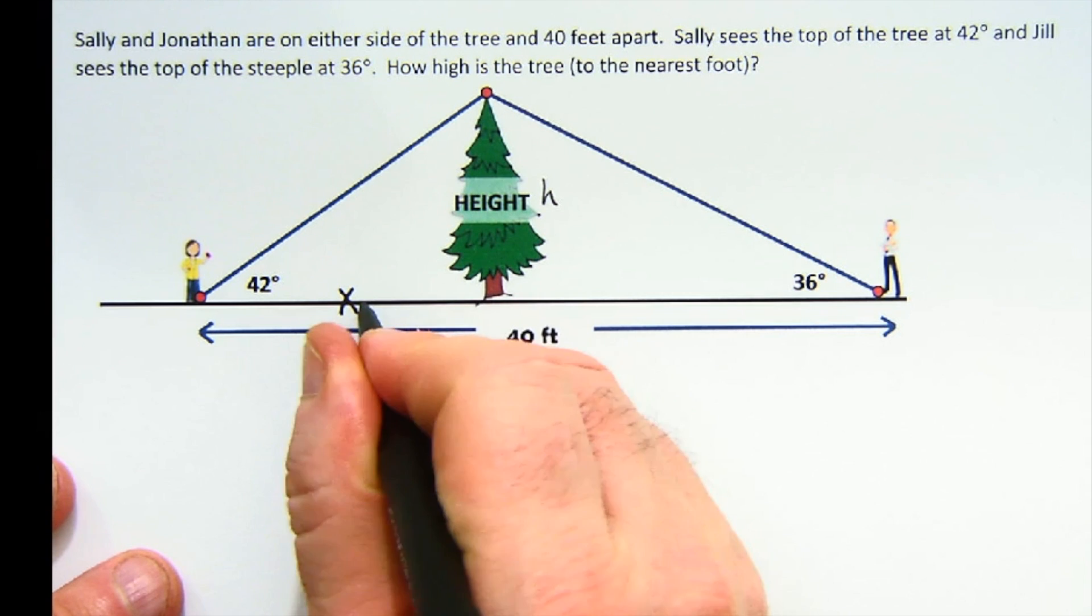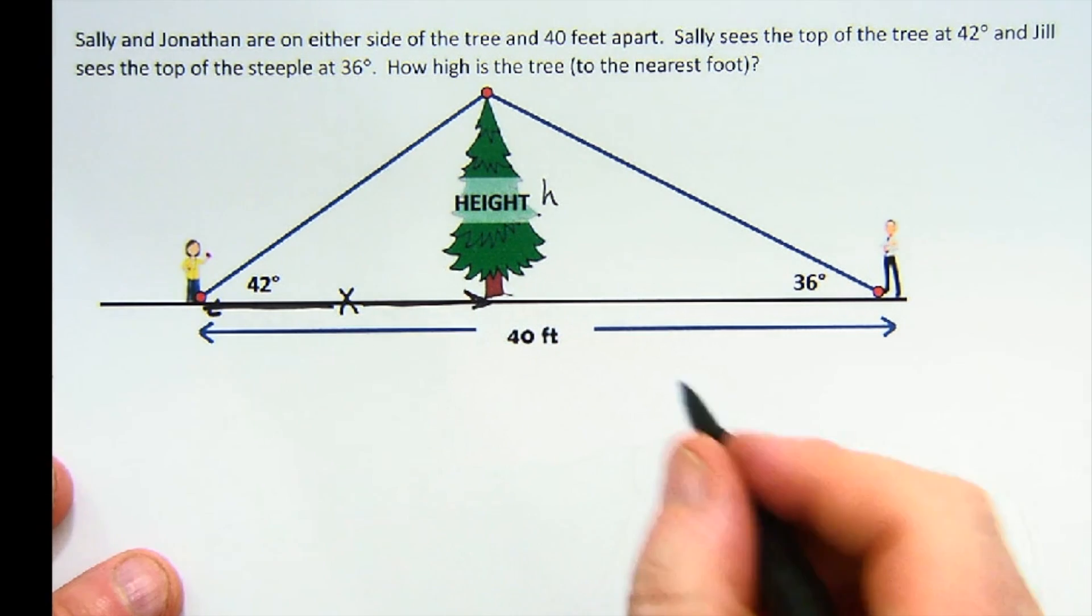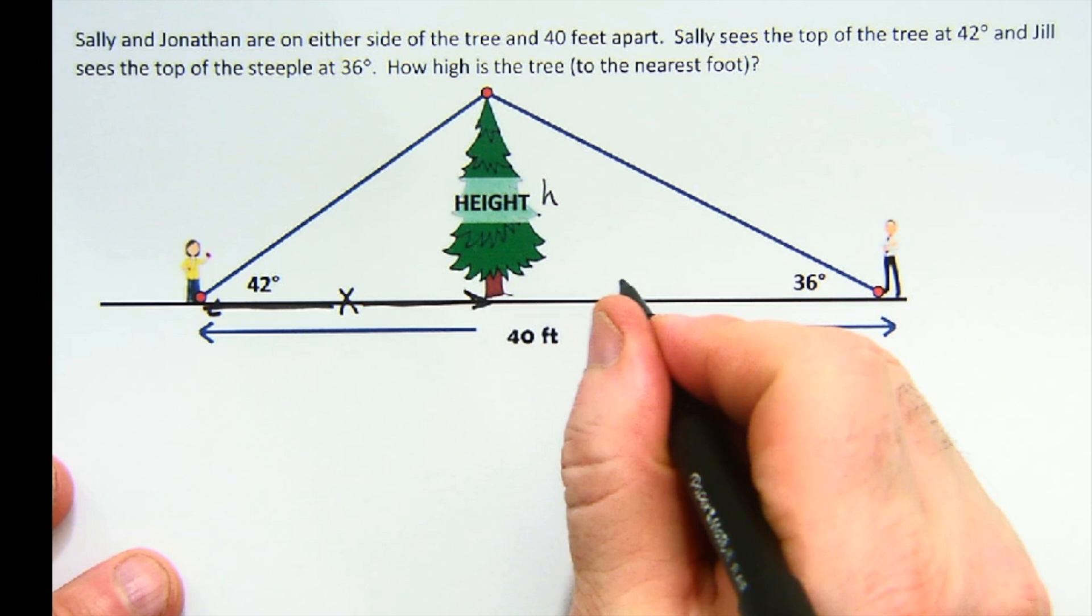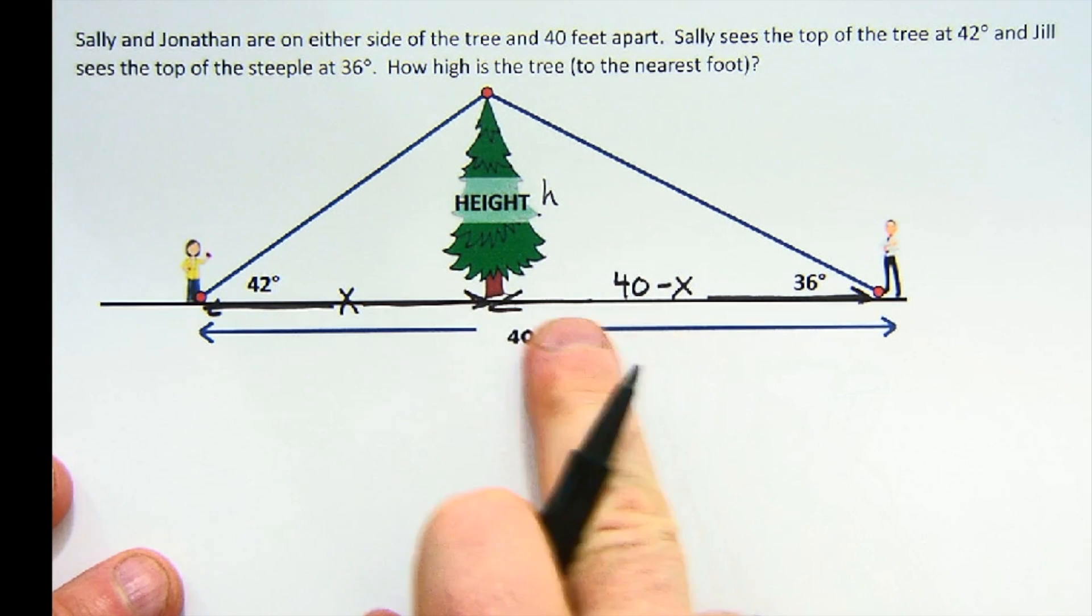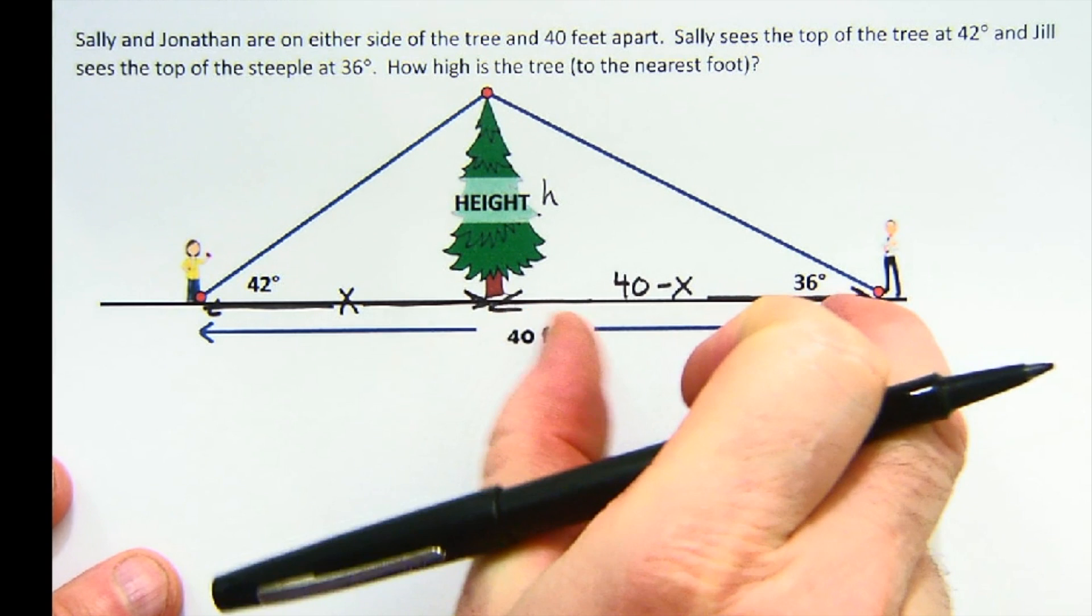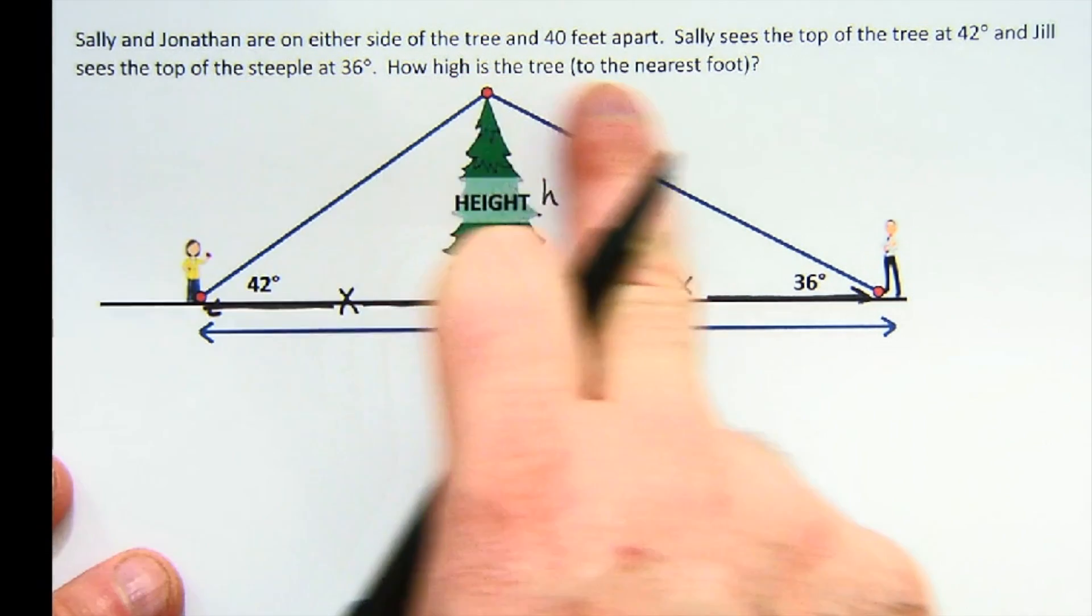This would be, I'm going to call this x, the distance from here to the tree, from our friend Sally. And over here, here's 40 minus x. That's a very important part of being able to solve this, is that this is whatever's left over the 40. We don't know that this is in the middle. They might even tell us it's not the middle, but that's okay.